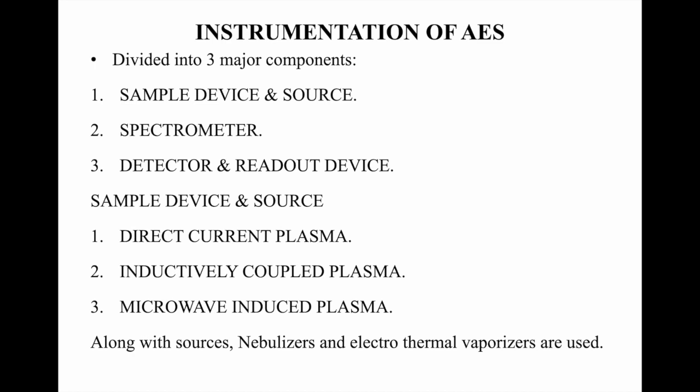Now let's look into the instrumentation of AES. They are mainly classified into three types: first is the sample device and source, second is the spectrometer, and third is the detector and read-out devices.